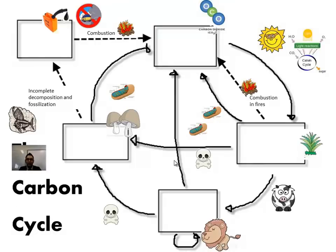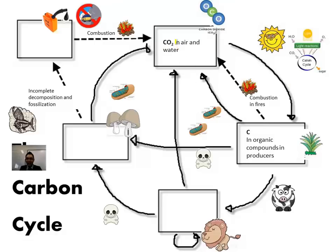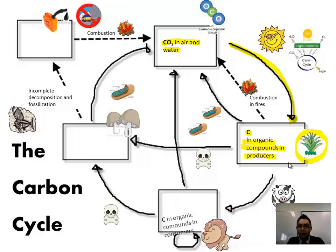The point is not to memorize this cycle but to understand it — think about it logically, starting from carbon. Where is carbon found? Let's start with carbon dioxide in the air — we need it there. It traps some heat and allows us to have relatively stable global temperatures so life can keep going. Carbon dioxide in the air is there as a result of a few processes. What can use it? Here's a plant — it does photosynthesis, converting inorganic carbon into organic compounds in producers. That's basically glucose, the product of photosynthesis: carbon dioxide gets converted to glucose.